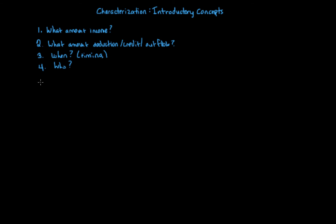Finally, the last of the five questions that you always look at whenever you have a transaction for income tax purposes is the character — the characterization. What is the character of the item of income, loss, deduction, or credit? Now, a credit is just a credit. But when it comes to income and deductions, we have to look at the character.